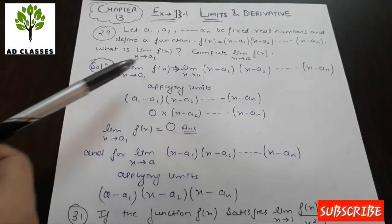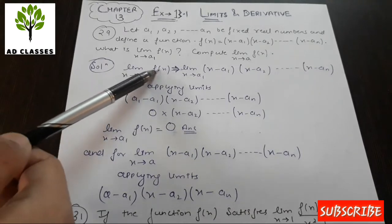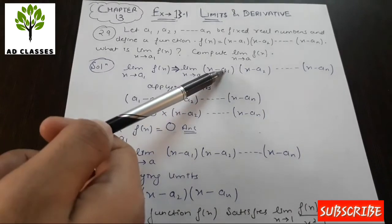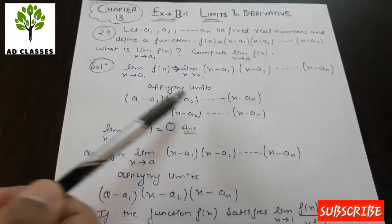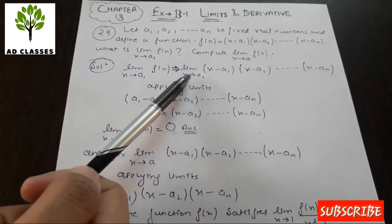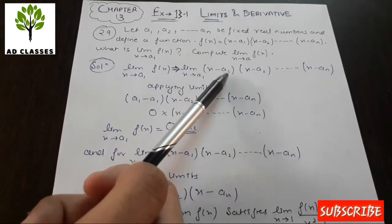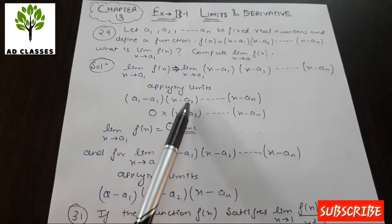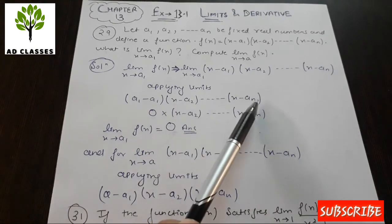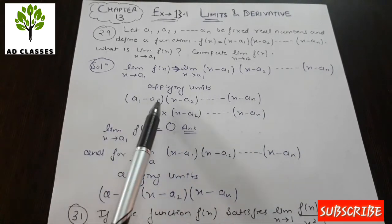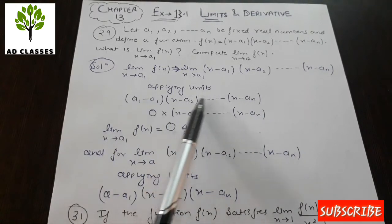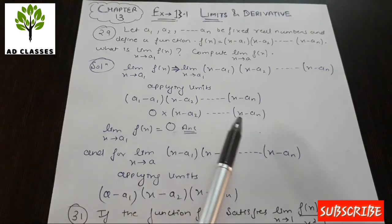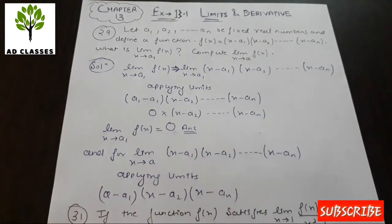We directly substitute x = a1 into f(x) = (x - a1)(x - a2)...(x - an). When we put x = a1, the first factor becomes a1 - a1 = 0. Since all terms are multiplied together and one factor is 0, the entire product is 0. So the limit as x tends to a1 of f(x) equals 0.